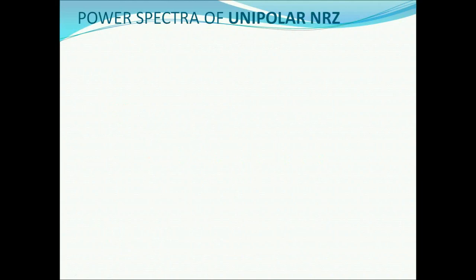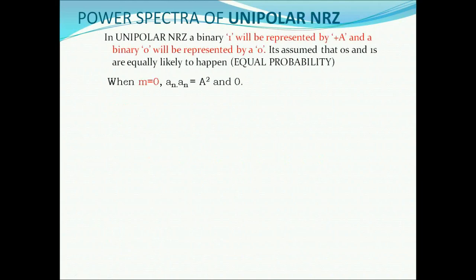Power spectra of unipolar NRZ. In unipolar NRZ, a binary 1 is represented by +A and a binary 0 is represented by 0. It is assumed that 0s and 1s are equally likely, i.e., they have equal probability of occurrence.